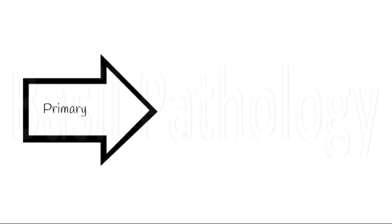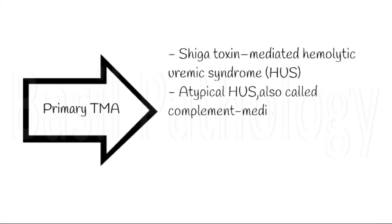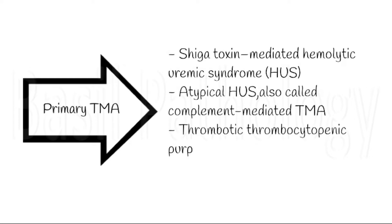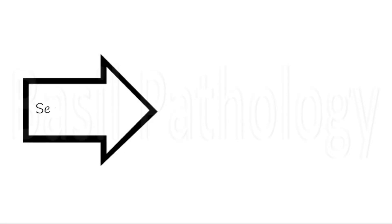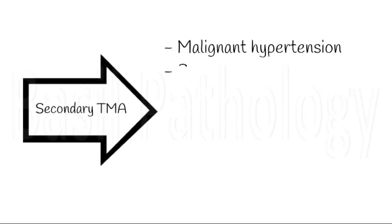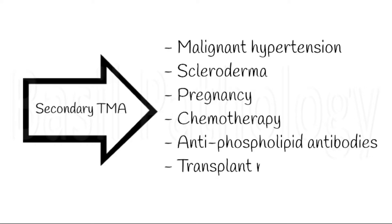The primary TMA is of four types: Shiga toxin-mediated HUS (hemolytic uremic syndrome), atypical HUS or complement-mediated HUS, thrombotic thrombocytopenic purpura, and drug-mediated TMA. The secondary TMA is due to many diseases like malignant hypertension, scleroderma, pregnancy, chemotherapy, antiphospholipid antibody syndrome, and transplant rejection.